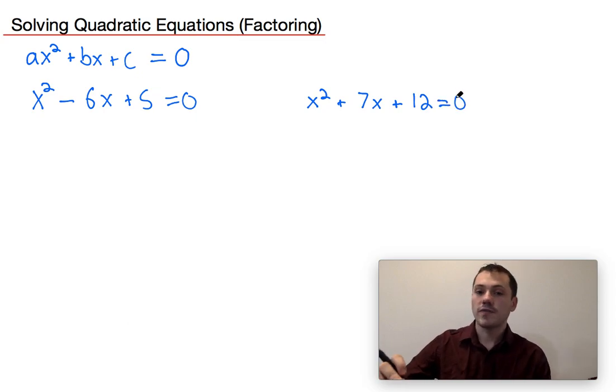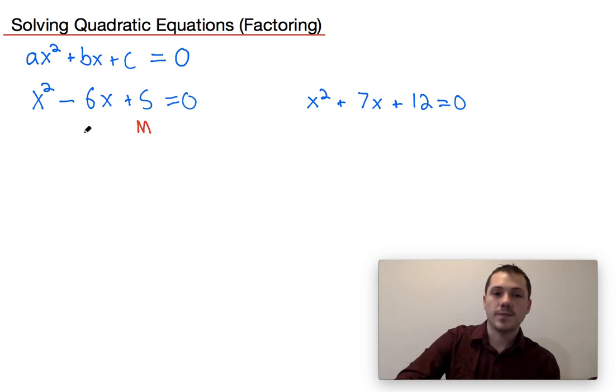And what we can see here is the coefficient on the x squared term is not equal to one. I think I said zero earlier, it's in fact one. So when the coefficient on the x squared term is equal to one, all you need to do is find a number that multiplies to this value but adds to this value. So we're looking for two numbers that multiply to our c term but add to our b term.